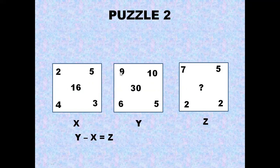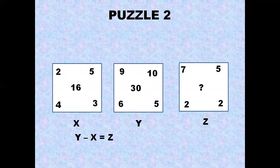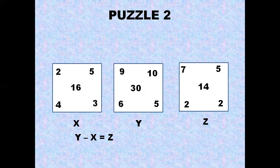So if we do y - x = z. Suppose we are considering this square as y, the leftmost number in y square, and we take the leftmost number in the x square. So we do 9 - 2, we get leftmost number of z which is 7. Similarly, 10 - 5 is 5, 6 - 4 is 2, 5 - 3 is 2. We follow the same pattern for the middle number as well: 30 - 16 = 14. So we get 14 by following the pattern y - x = z.